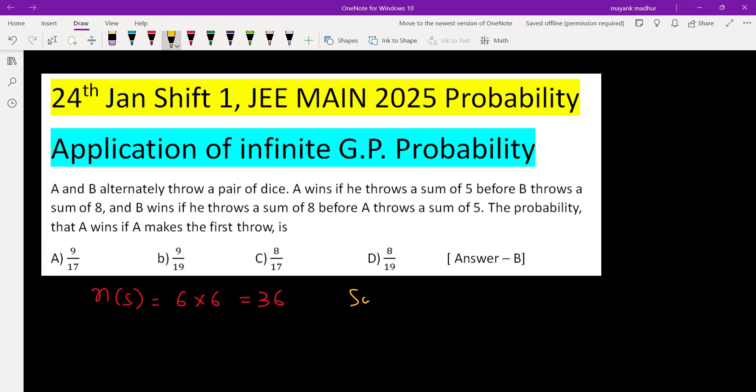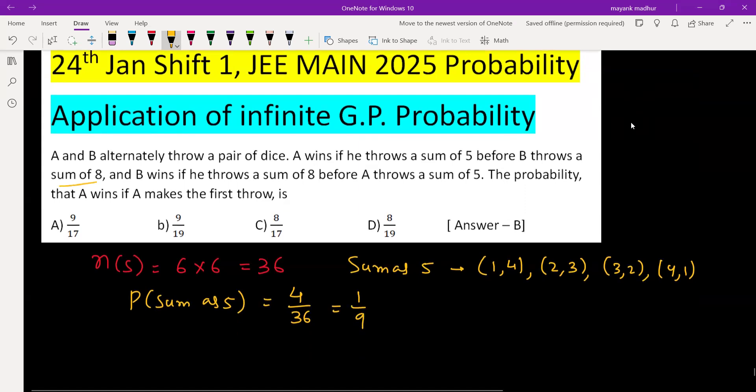Now what is the probability of getting sum as 5? Sum 5 when your outcomes are (1,4), (2,3), (3,2), and (4,1). So 4 favorable cases out of 36, making the probability of sum as 5 equal to 1/9.